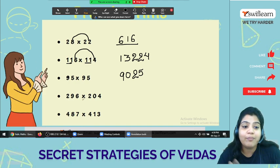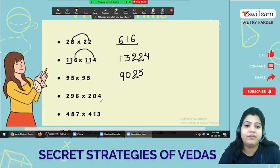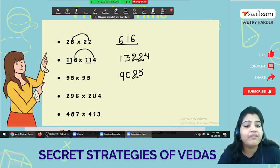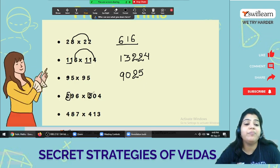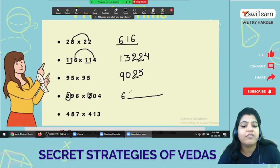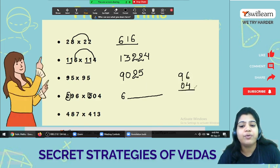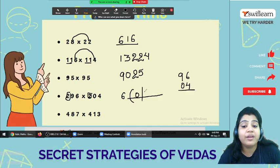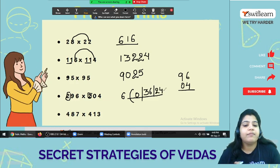Now let's see some more examples in which the last digit sum comes up to 100. 296 times 204. 96 plus 4, here 2 are identical. So 2 times next number that 3 is 6. And for this part let's multiply this one. So 96 and 04. So what's the 0? And this one is 36 and 24.